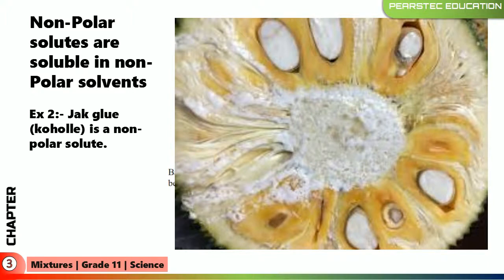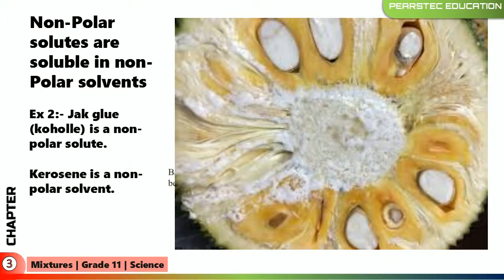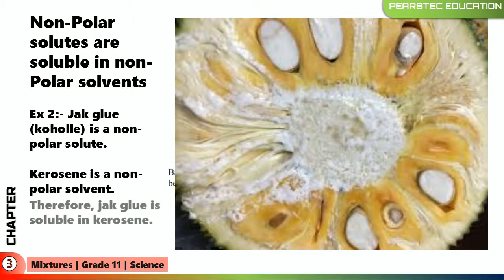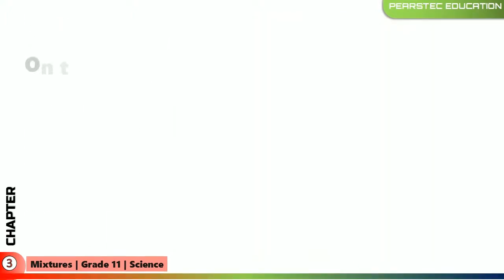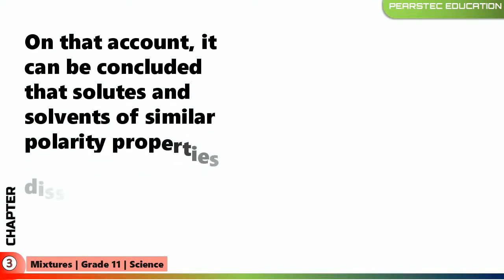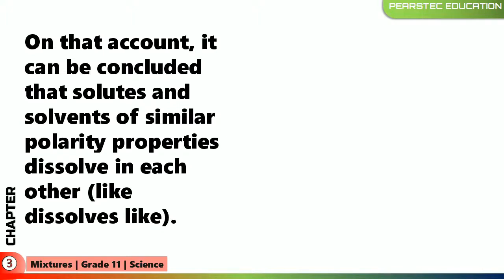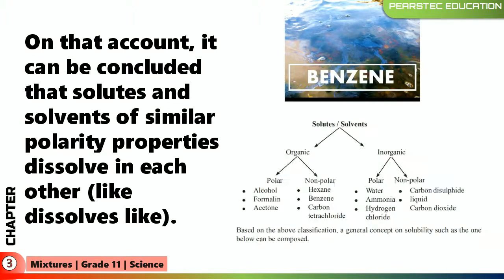Let's understand another example: jack glue, called 'kohelle' in Sinhalese or 'pissin' in Tamil. Jack glue is a non-polar solute and kerosene is a non-polar solvent. If you want to wash away jack glue, you need kerosene, not water. Therefore, jack glue is soluble in kerosene. From this, it can be concluded that solutes and solvents of similar polarity properties dissolve in each other — like dissolves like. For example, benzene placed on top of water does not dissolve because benzene is organic non-polar and water is inorganic polar.